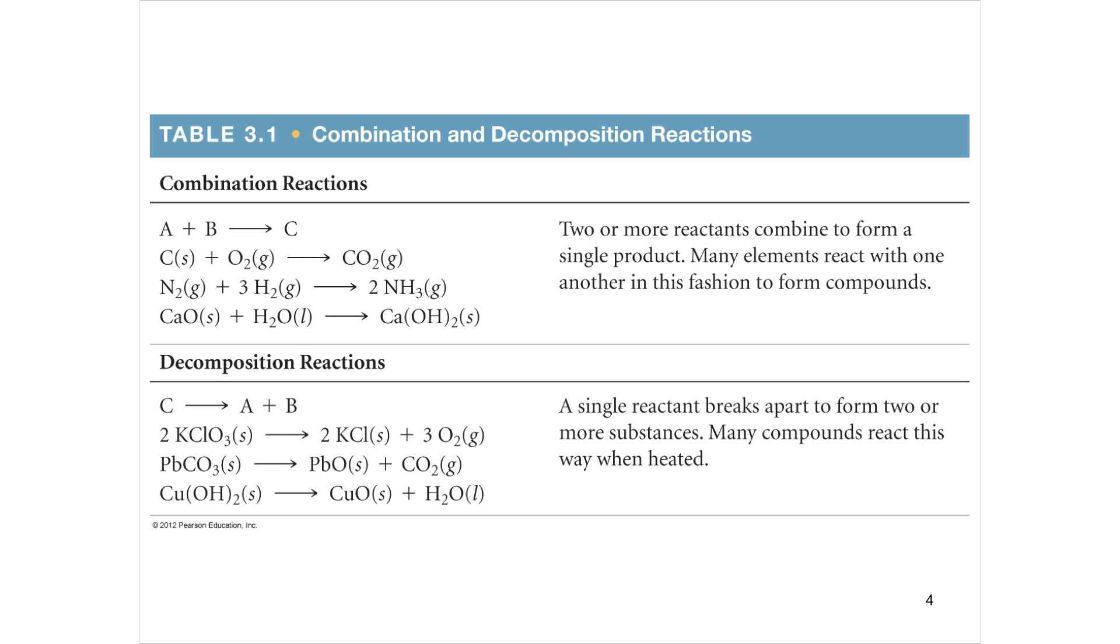So here's a combination. This is how I learned it. A is some reactant. B, A plus B yields C. So C is some bigger reactant that A and B kind of fuse together to make. So carbon plus oxygen is carbon dioxide. Nitrogen plus hydrogen is ammonia. Calcium oxide plus water is calcium hydroxide. So something small fuses together into something big.